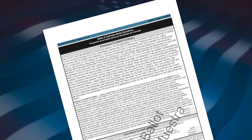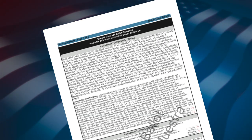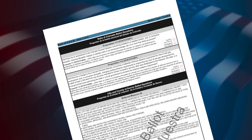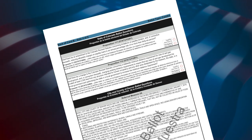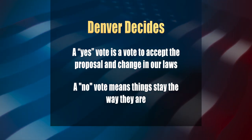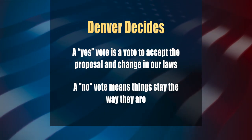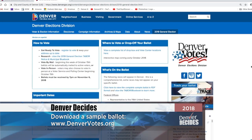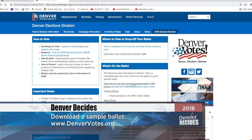There are several statewide and citywide questions on the ballot. Several of these issues are citizen-initiated measures, meaning citizens gathered enough signatures on a petition, which were then certified by the Secretary of State and placed on the ballot. The other issues were referred to voters by legislators. It's important to remember that a yes vote is a vote to accept the proposal and change in our laws. A no vote means things stay the way they are. You can download a sample ballot at DenverVotes.org, in the What's on the Ballot section.